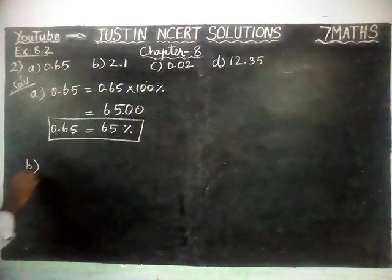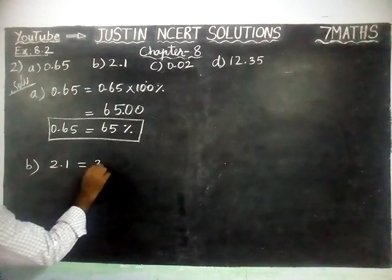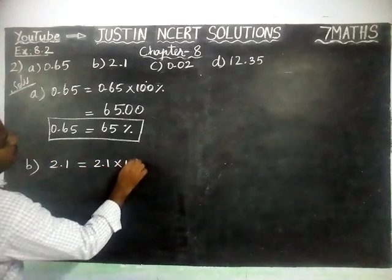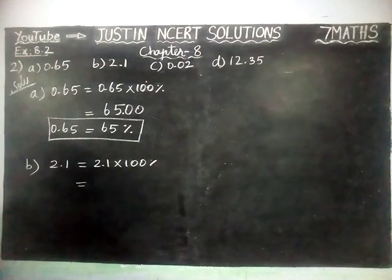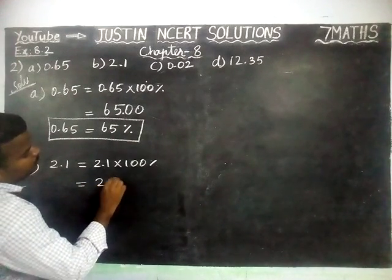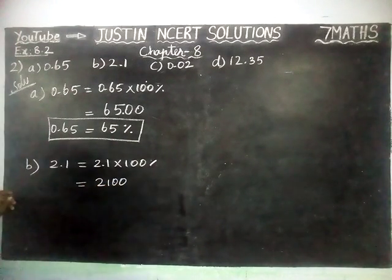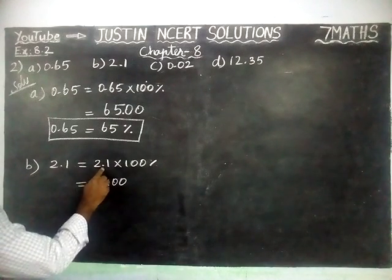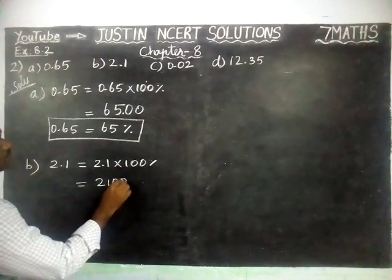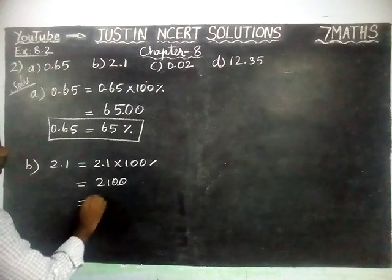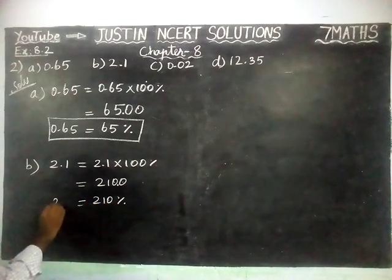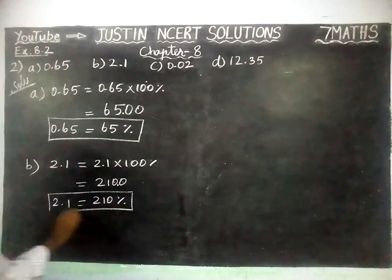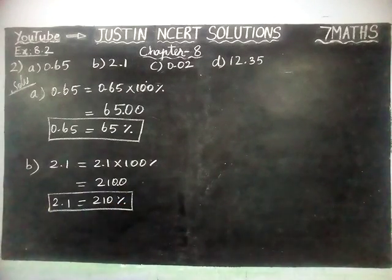Part B: 2.1 is equal to 2.1 into 100%. Now, forget about the decimal point, just multiply 21 into 100, which gives 2100. And here we have 1 decimal place, so from the right hand side we make 1 decimal place, which means this zero will be cancelled. So 2.1 is equal to 210%.